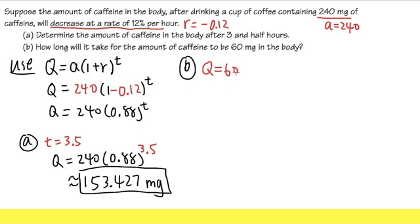Therefore, I have to put in 60 into the q. So 60 is equal to all this. So we have 60 equals 240 times 0.88 raised to the t's power like that.